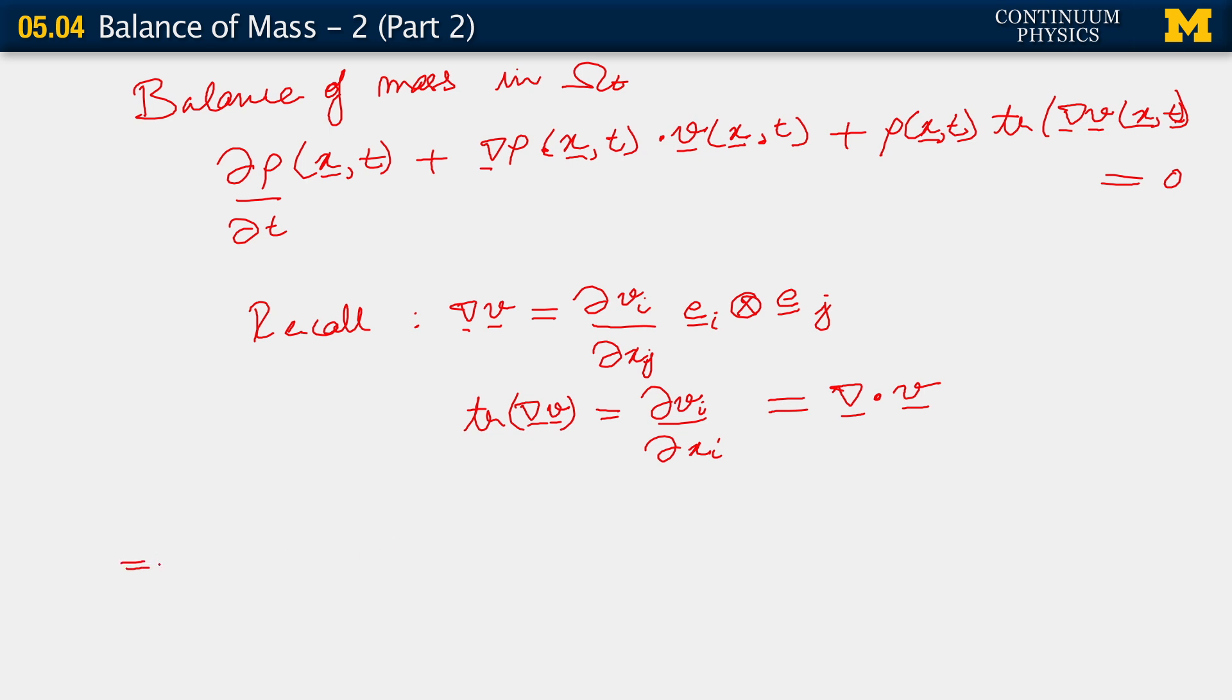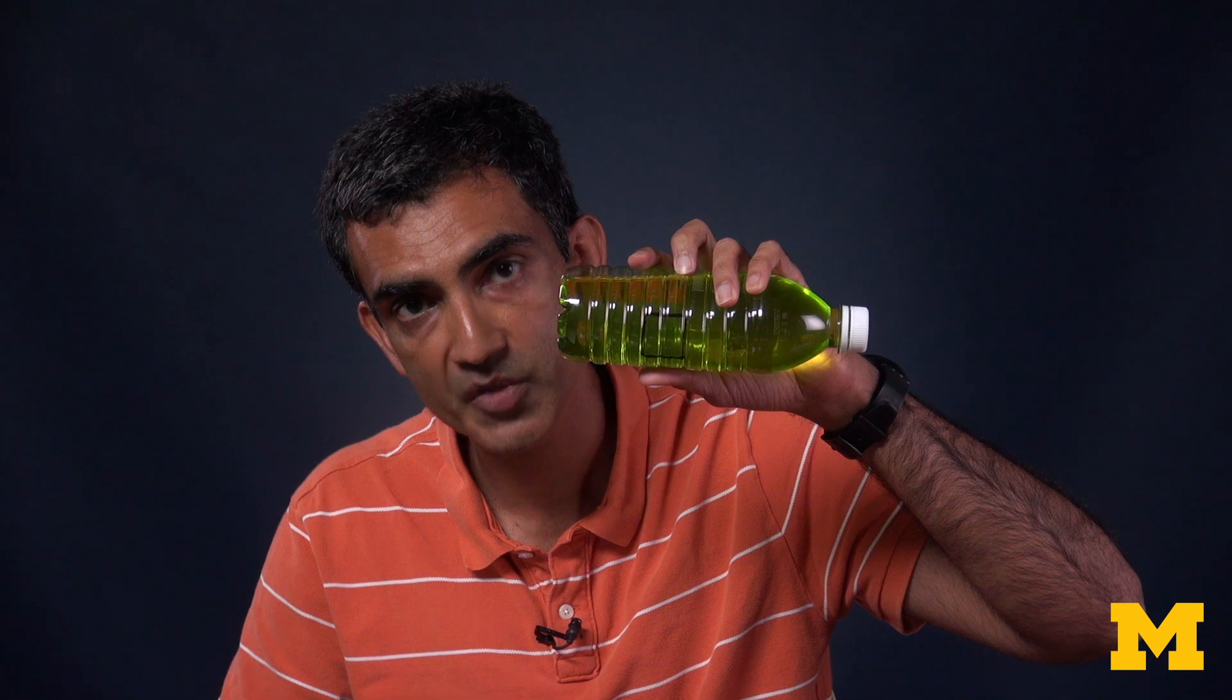All right. So, we have partial of rho with respect to time, plus nabla rho dotted with v, plus rho divergence of v equals zero. This is the conservation of mass or the balance of mass written in the current configuration. Which is the description you need if the current configuration is all you have in life. Observe that everything is in terms of spatial objects. So it's consistent to be used with an Eulerian description of motion.